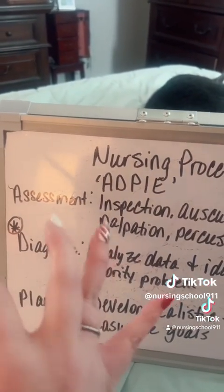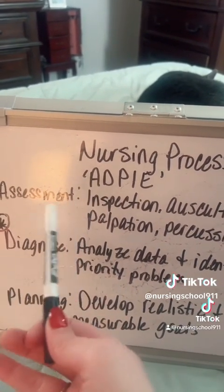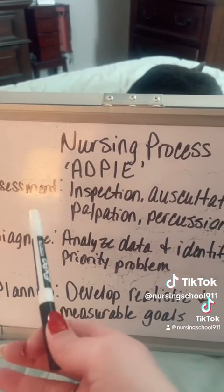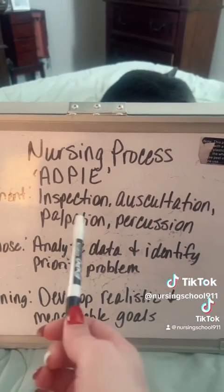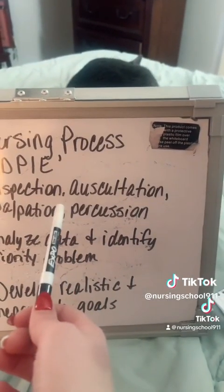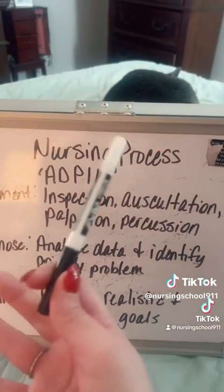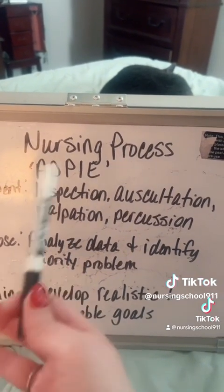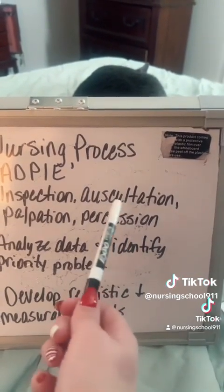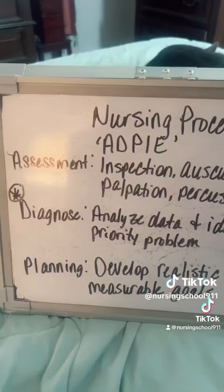Step number one is always assessment. We have to assess in order to draw conclusions about what's wrong with our patient and what we need to do for them. This includes inspection — how does the patient look overall — auscultation for heart sounds and breath sounds, palpation to check for masses or tenderness, and percussion, which helps us analyze the shape, size, and borders of organs.